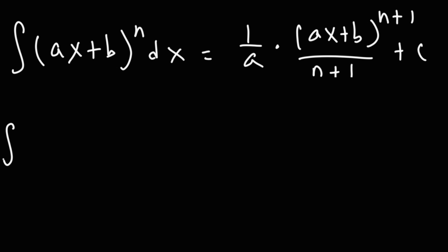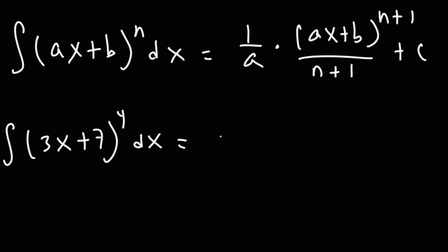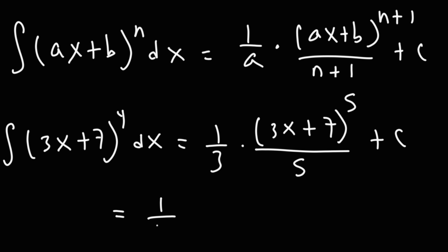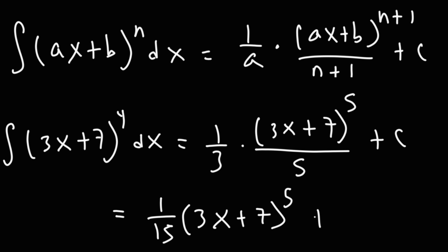Another example: the integral of 3x plus 7 raised to the 4th power. Here a is 3, so it's 1 over 3 times the original expression. We add 1 to 4 to get 5, divide by 5, giving 1 over 15 times 3x plus 7 raised to the 5th power, plus c.